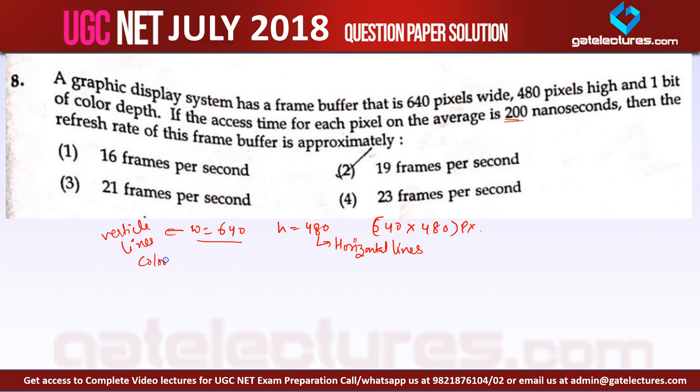And the color depth that is given, color depth that is given is 1 bit per pixel. What does it mean? It means that if this is the display, now in this display, here this is 640 pixels.